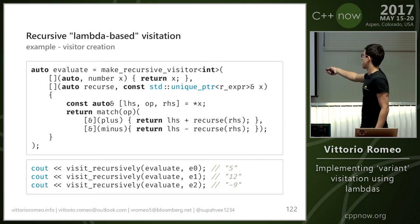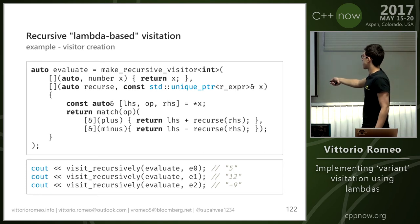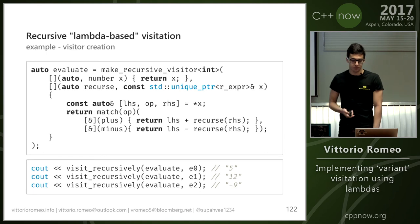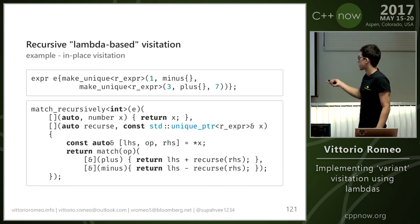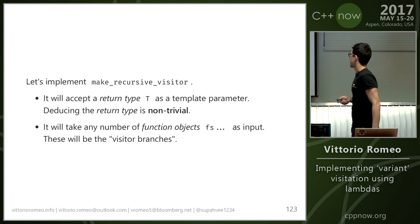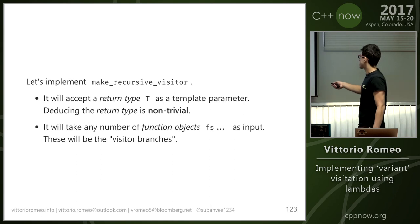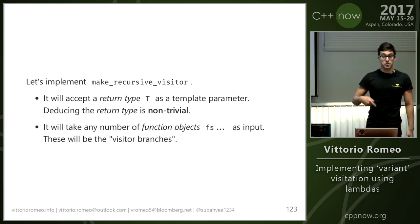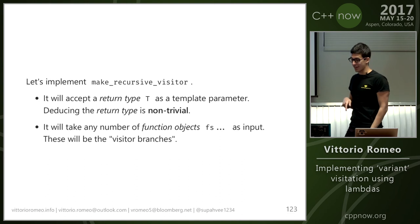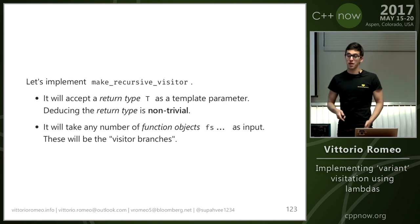You can also create a visitor if you don't want to recurse match in place — I provide a make_recursive_visitor function which takes the lambdas and then you use it with visit_recursively as an argument to start the visitation. This is obviously a building block for match_recursively. make_recursive_visitor will accept a return type T as a template parameter — deducing this return type is non-trivial. I spent hours on it and couldn't find a way, but I'm open to suggestions.